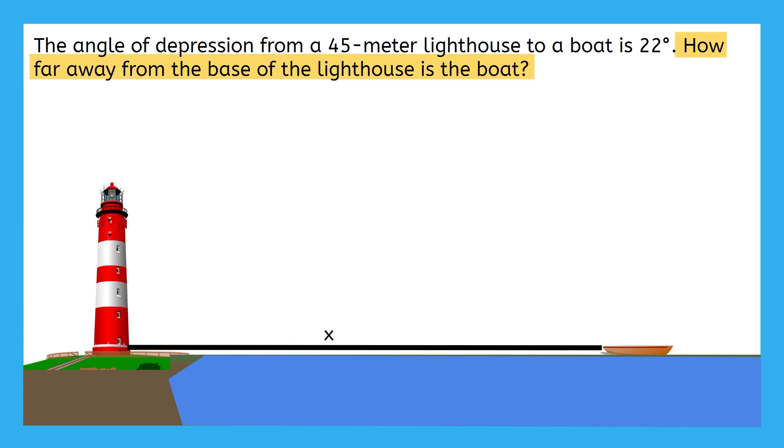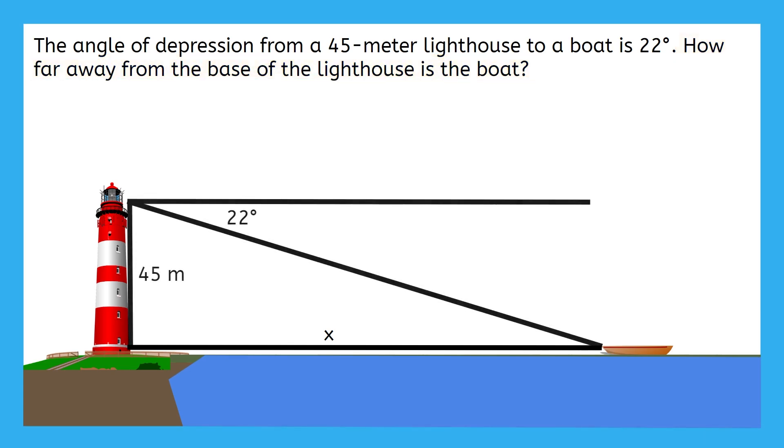When all these things come together, we have this. We can see the 22 degree angle of depression. But it's not in a super useful place because it's not inside the triangle. But do you remember what we learned a few moments ago about the angle of elevation and the angle of depression?